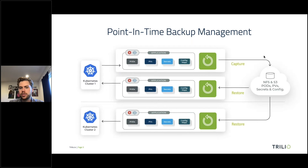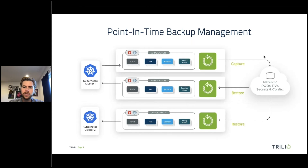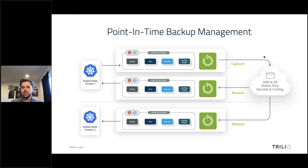Let's say cluster 2 is an RKE cluster and cluster 1 is upstream Kubernetes. Even though these are two different distributions using different storage classes or services, you can actually do transforms in Trilio to ensure that the application from cluster 1 using storage class 1 successfully uses the RKE Longhorn storage class when that restore occurs. You can customize those components before the application is even deployed into your new Kubernetes cluster.